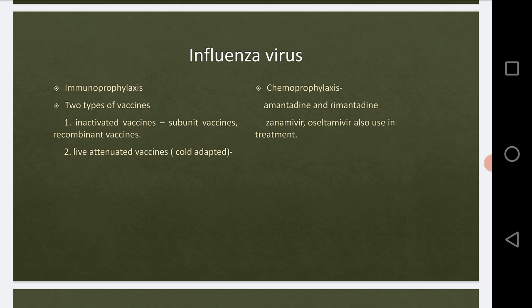The inactivated vaccines have some side effects such as fever and local pain. To reduce these, we use modified subunit vaccines. Recombinant vaccines are also used, in which the vaccine contains antigens from new variants, so the body has immunity against various antigenic variations of the virus. The second type is the live attenuated vaccine, also called the cold-adapted vaccine, which enables specific local immunization.